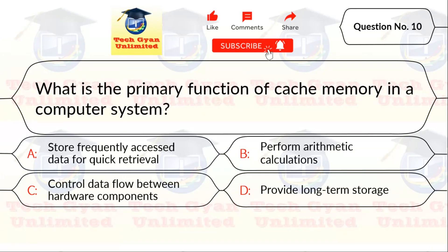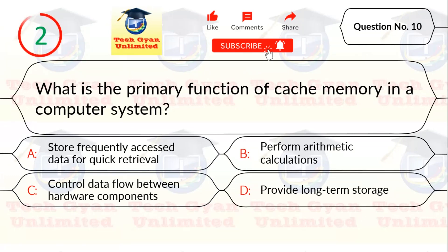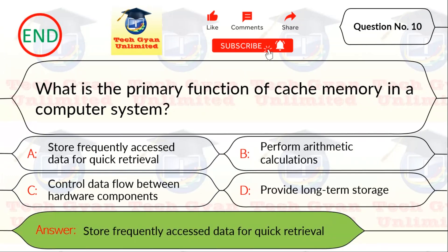Q10. What is the primary function of cache memory in a computer system? Correct answer is: stores frequently accessed data for quick retrieval.